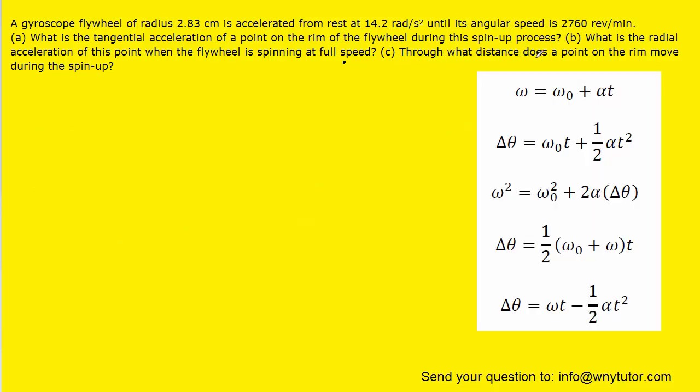For part C, to calculate the distance that this point moves during the spin-up, we can actually calculate the angular displacement first, which is the delta theta. And then once we have that angular displacement, we can convert that into a distance. But first, let's calculate the angular displacement using one of our equations from kinematics.